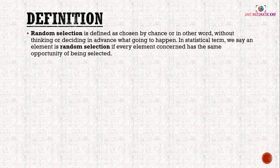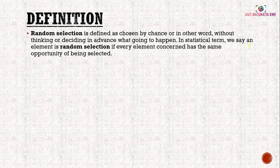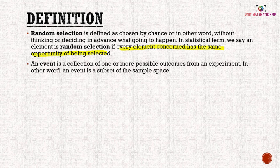Random selection is defined as chosen by chance — in other words, without deciding in advance what is going to happen. In statistical terms, an element is a random selection if every element has the same opportunity of being selected, which is what we call pilihan secara rawak. An event is a collection of one or more possible outcomes from an experiment; in other words, an event is a subset of the sample space.